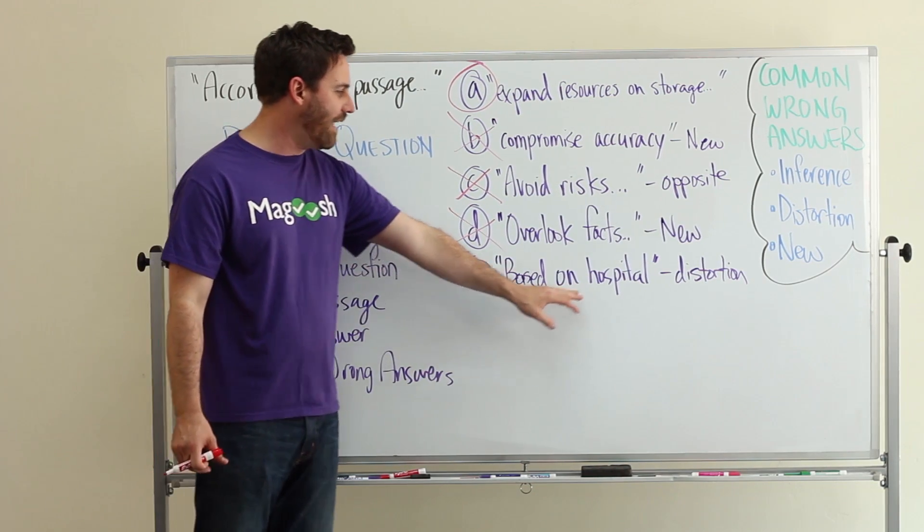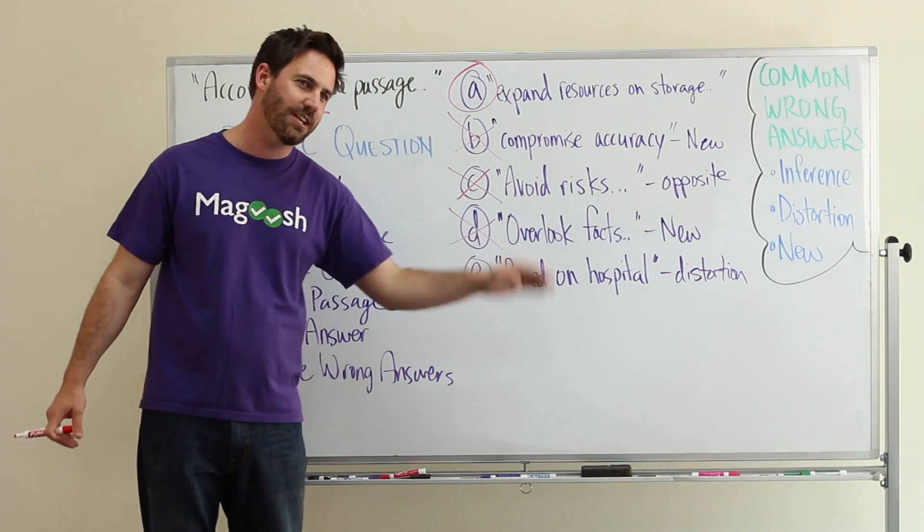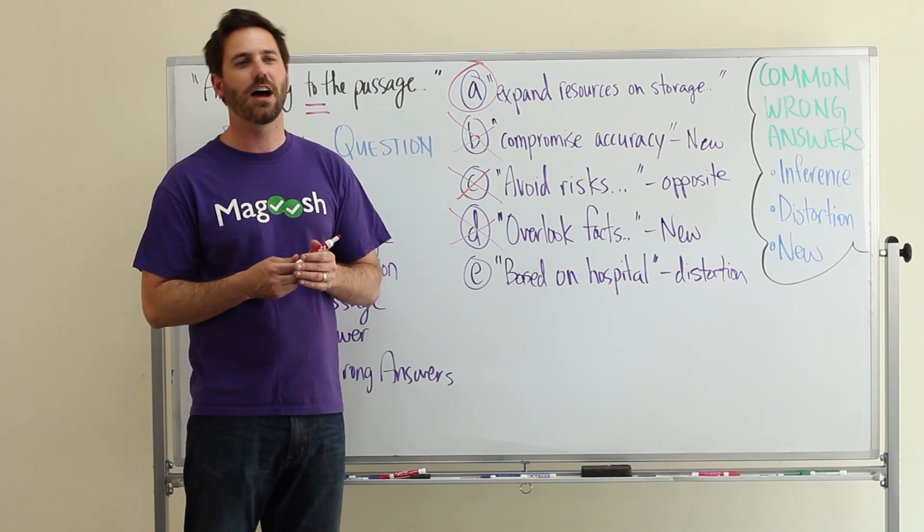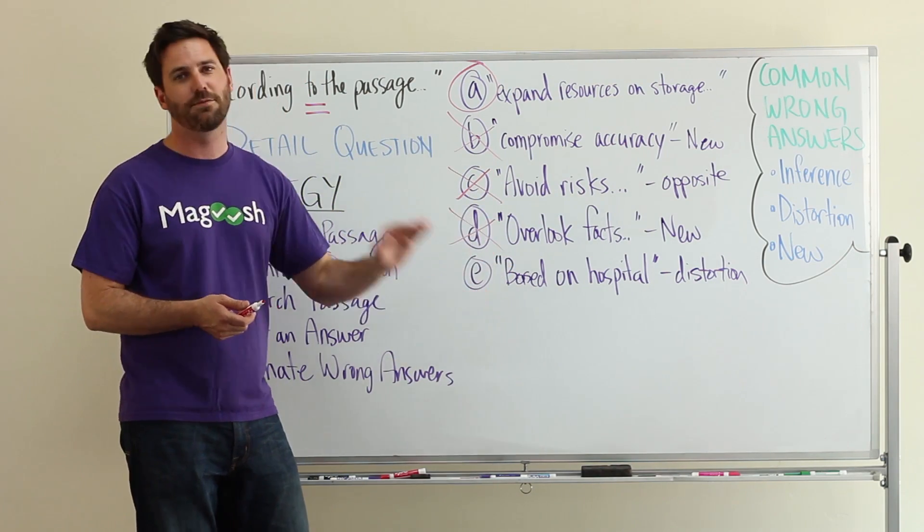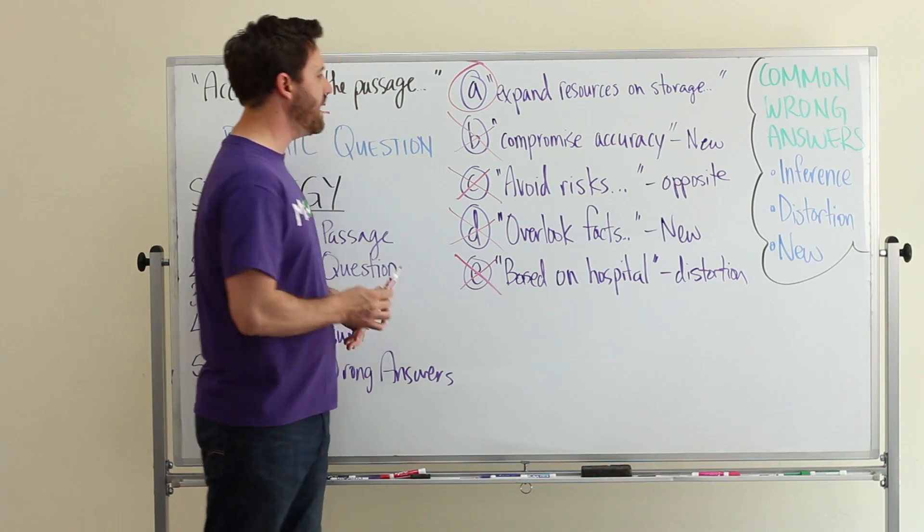And finally, E: based on how they collect information on a hospital - this is a distortion. It's actually not how things are collected in the hospital, and the passage actually explicitly states that they don't follow the procedures that hospitals do. So we can eliminate E, and we're left with A.